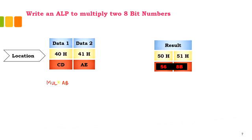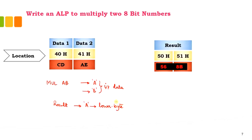The two 8-bit numbers to be multiplied should be stored in the A register and the B register. Initially, you need to store the input data in these registers. After performing the multiplication, the accumulator will hold the lower byte of the result, and the B register will hold the upper byte of the result.